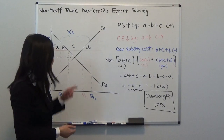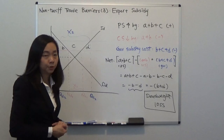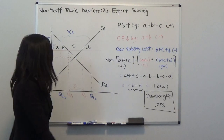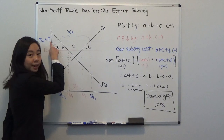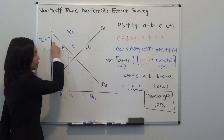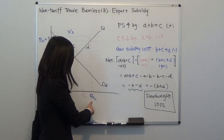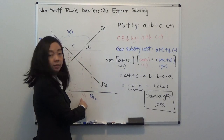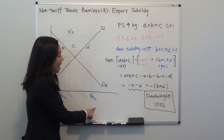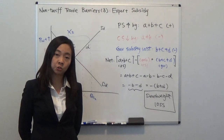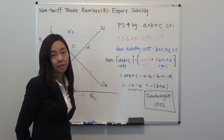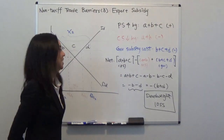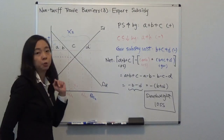Now the government says: not only will you get PW when you export, but I'm going to pay you T dollars on top of that. With that new price PW plus T, quantity supplied increases from QS1 to QS2. And how much would domestic producers charge domestic consumers?